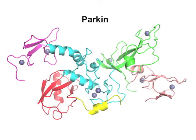Mutations in Parkin cause a familial form of Parkinson's disease. The Parkin protein protects neurons from cell death. In order to elucidate how Parkin achieves its protective function and how Parkinson's-associated mutations inactivate it, the teams of Dr. Gehring at McGill University and Dr. Phan at the Montreal Neurological Institute have determined its three-dimensional structure using a technique called X-ray crystallography.